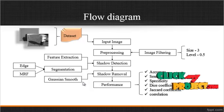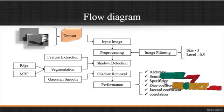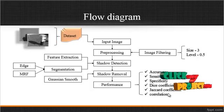After shadow removal, the shadow-free image is produced. Then performance is evaluated using parameters including Accuracy, Sensitivity, Specificity, Dice Coefficient, and Correlation. By these parameters, we can justify that our process is efficient.